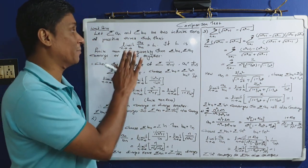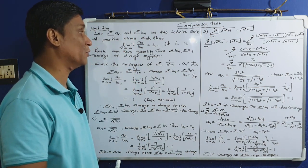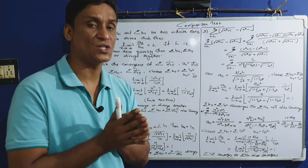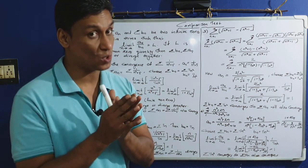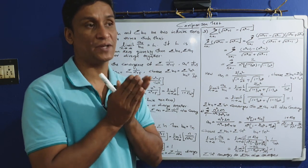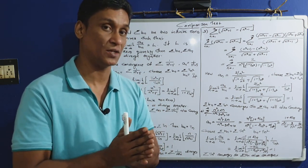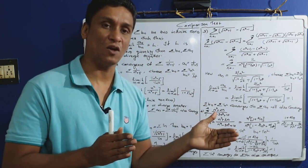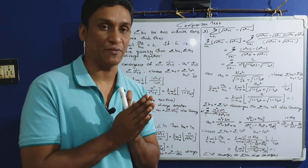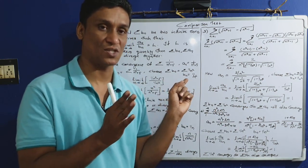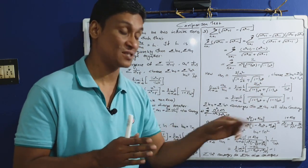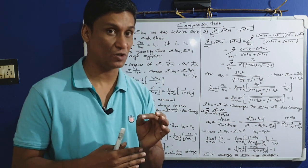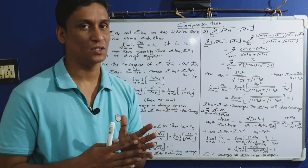In summary, the limit comparison test states: let sigma a_n and sigma b_n be two infinite series of positive terms. If limit n tends to infinity of a_n by b_n equals L, a finite nonzero quantity, then sigma a_n and sigma b_n behave similarly — if sigma b_n converges then sigma a_n converges, and if sigma b_n diverges then sigma a_n diverges. The key step is to choose the appropriate b_n series for comparison.